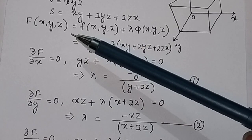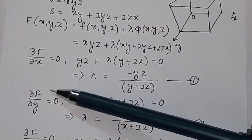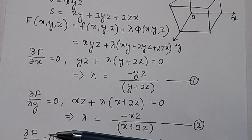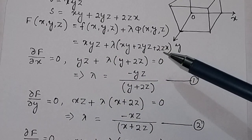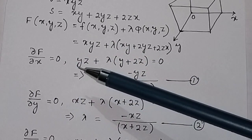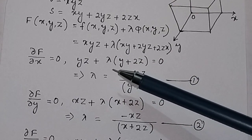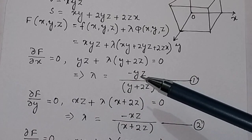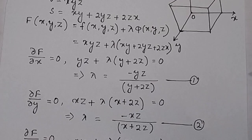We take the partial derivative of this function with respect to x and set it to zero. The partial derivative of xyz with respect to x is yz, and the partial derivative of the constraint term gives lambda into (y plus 2z), equal to zero. So lambda equals minus yz divided by (y plus 2z) — call this equation 1.